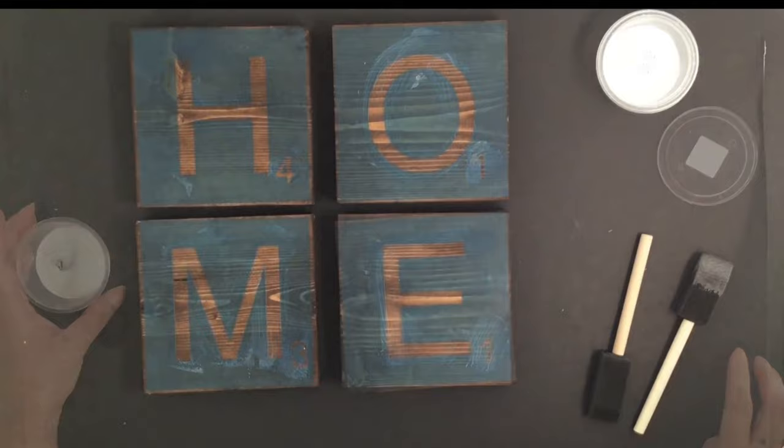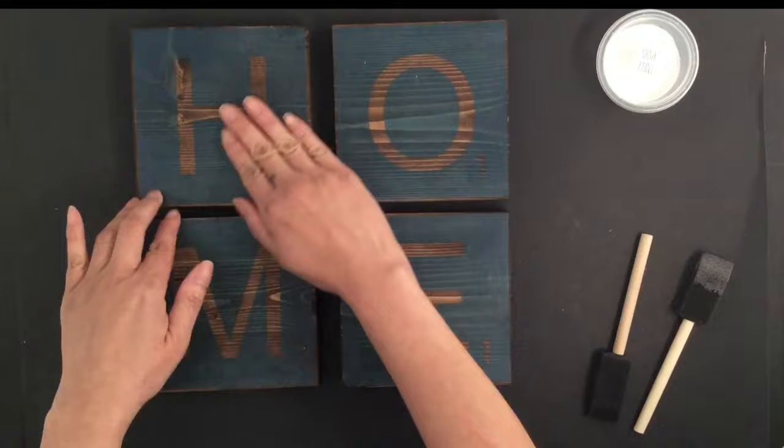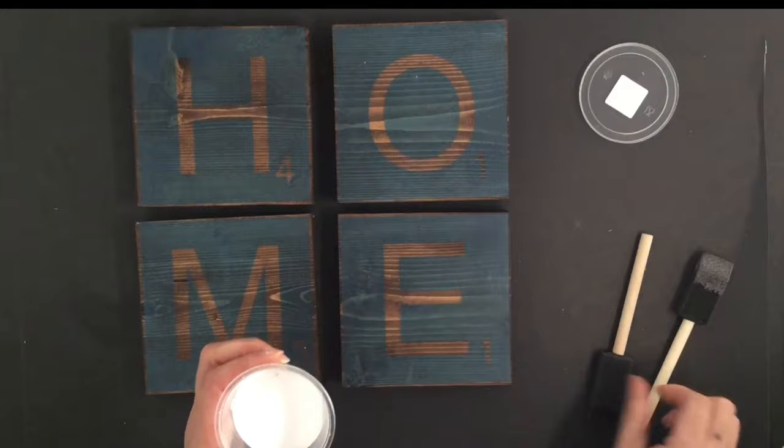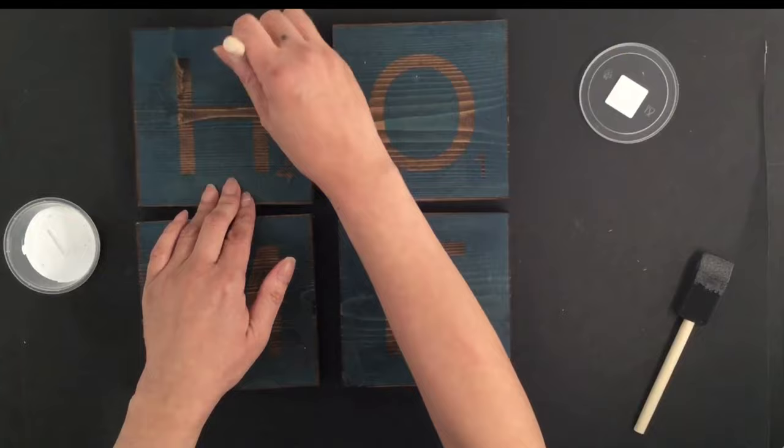Now that the pre-sealer is dry, you'll notice that it dried clear. We're going to go ahead and apply the first coat of the chalk paint. Take a fresh foam brush, and again, you just kind of lightly dab.